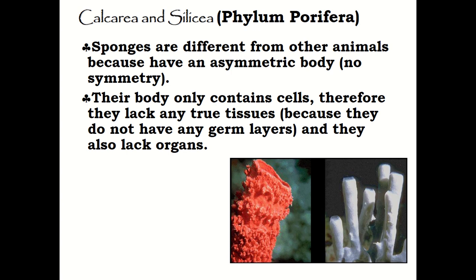Sponges in the phylum Porifera are different from other animals because they have an asymmetric body, meaning they do not have radial symmetry or bilateral symmetry. Their body contains only cells, and they lack true tissues because they do not have any germ layer — they are neither triploblastic nor diploblastic — and they also lack organs.